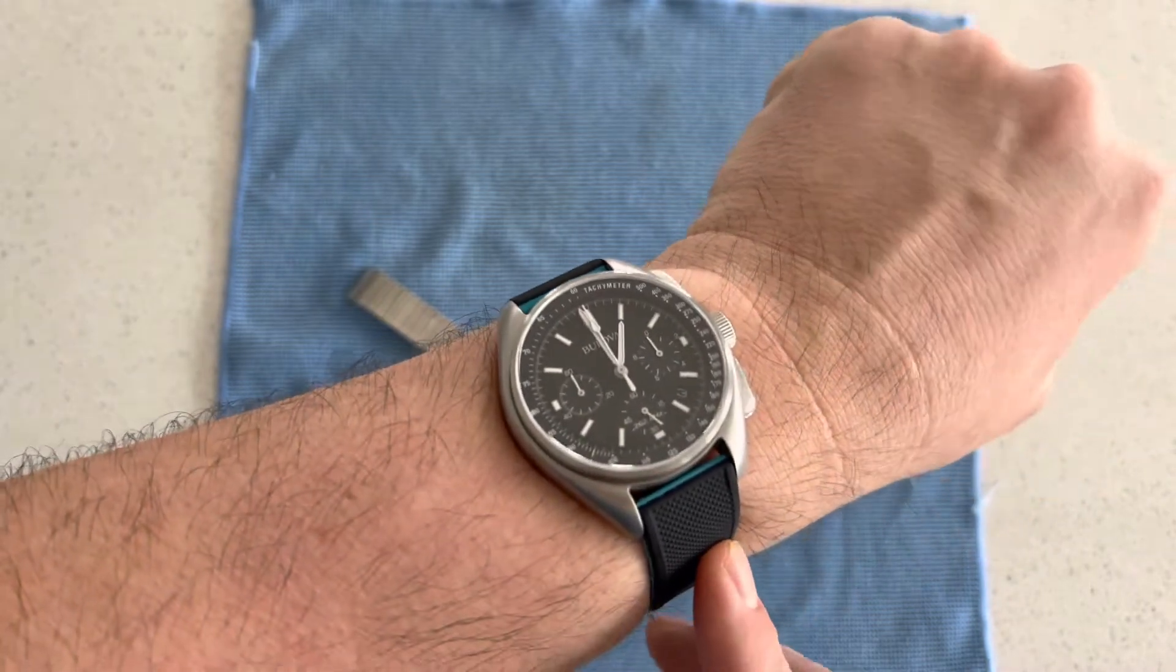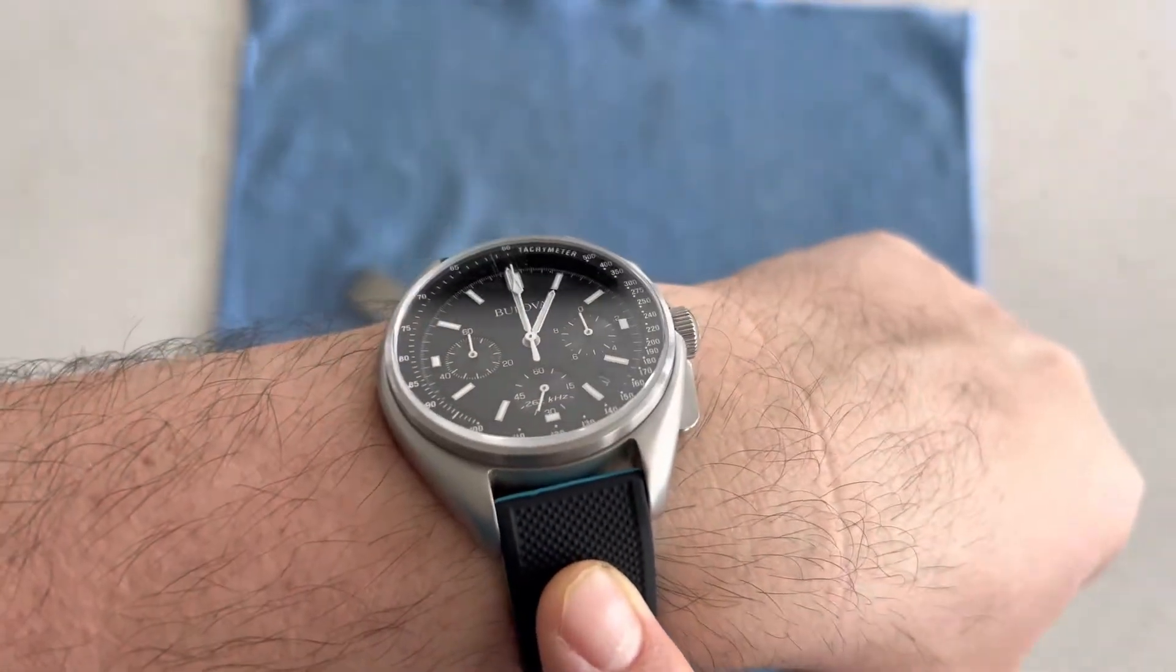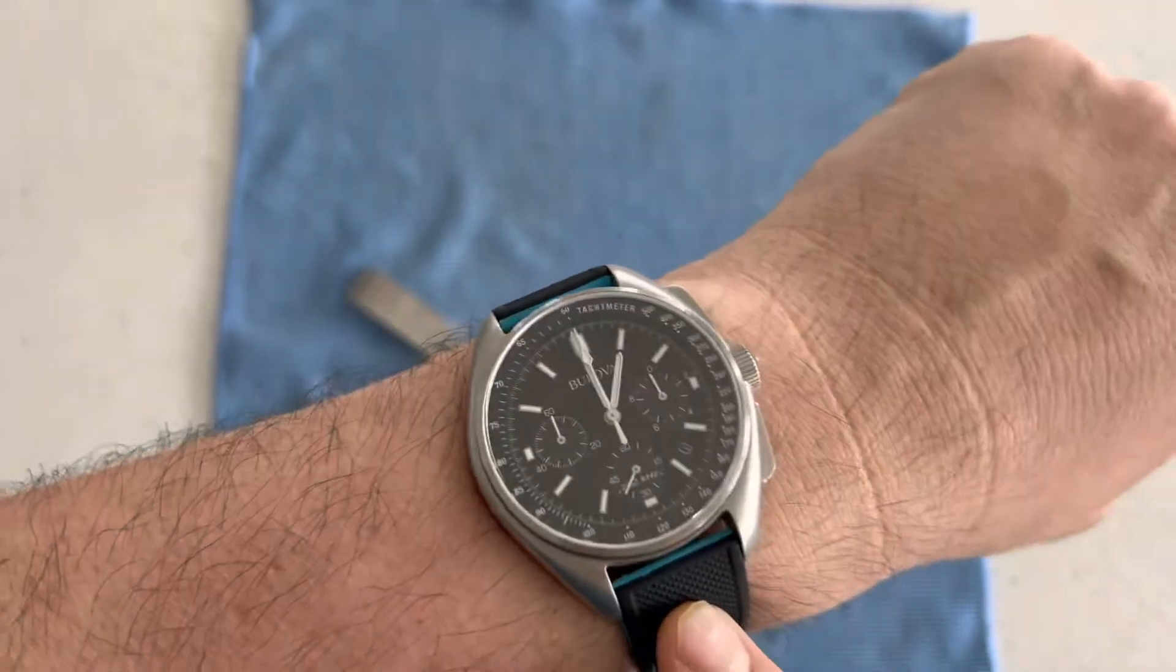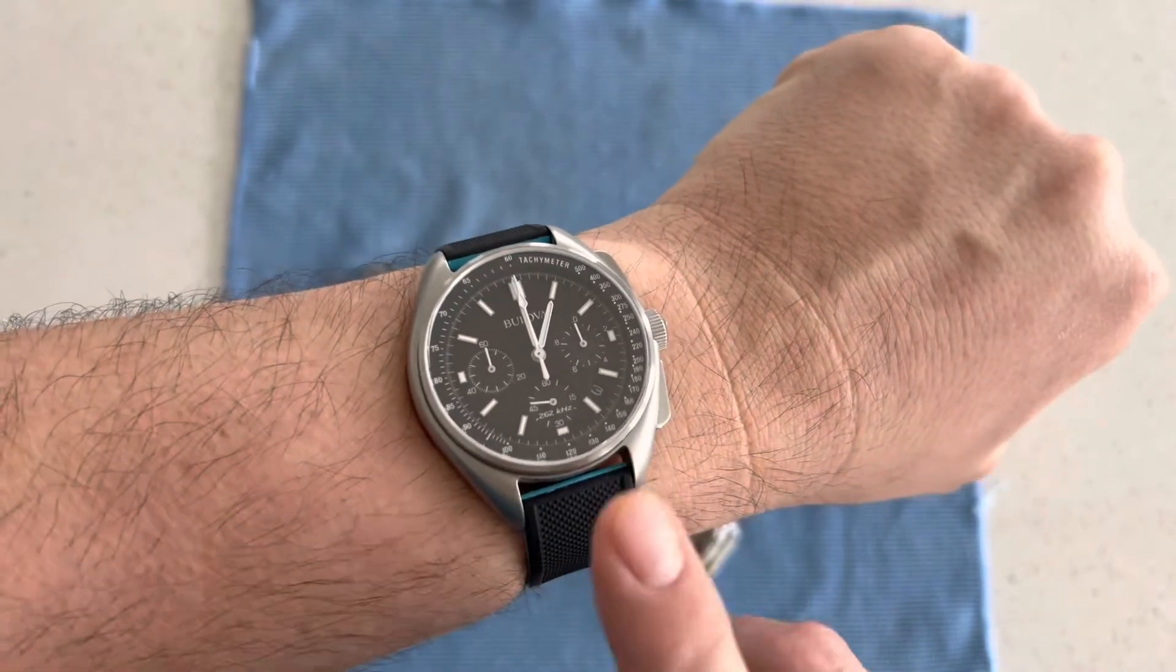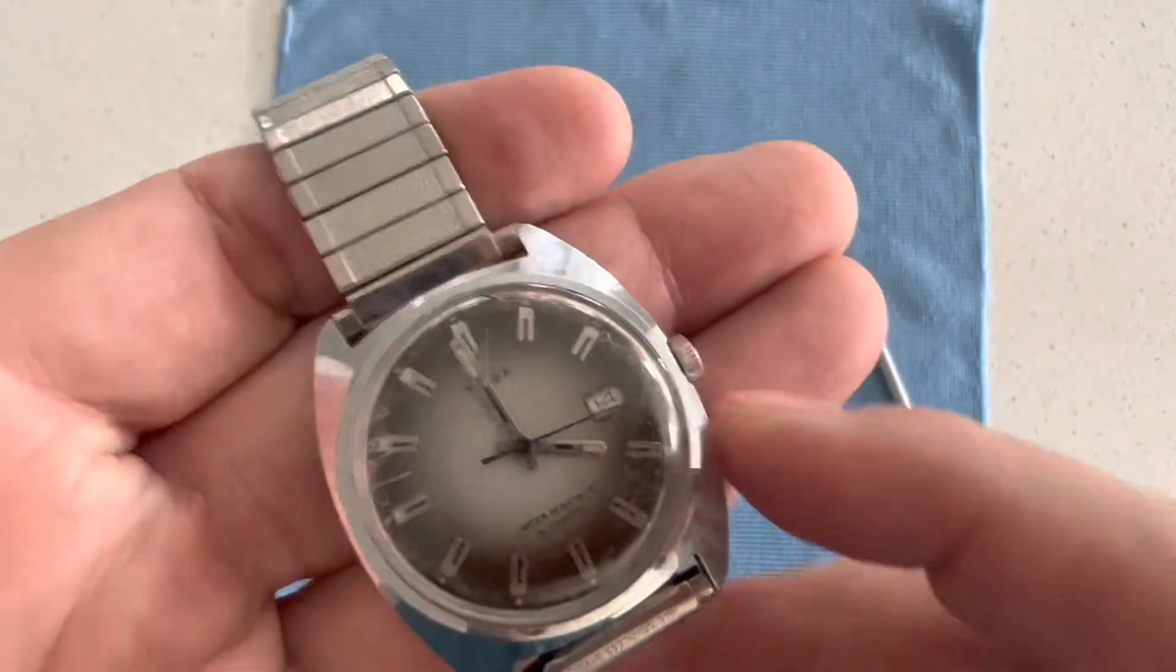Today I did some running around with the family. I decided to wear a more modern watch today because it was raining and I don't want to subject any of my vintage watches to any potential problems. So a more modern watch today for the rain and we're going to keep this on while we do some of the cleaning of the project watch.